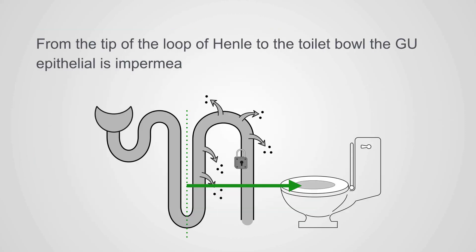From the tip of the loop of Henle to the toilet bowl, the GU epithelial is impermeable to water unless it's unlocked by ADH.